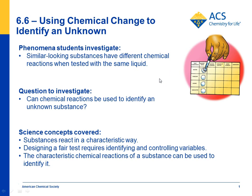The question students investigate is whether they can use chemical reactions to identify an unknown substance. The big ideas covered are that substances react in a characteristic way, that students can design a fair test where they need to identify and control variables, and that they can use these tests to figure out what an unknown substance is.